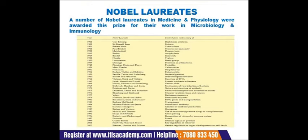Many Nobel laureates in medicine and physiology were awarded for work in microbiology and immunology. One of the first was Von Behring, who discovered diphtheria antitoxin. In 1930, Landsteiner discovered blood groups. In this way many scientists working in medicine and physiology were awarded Nobel prizes for their contributions.